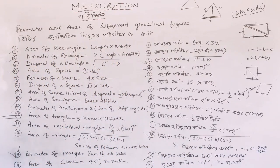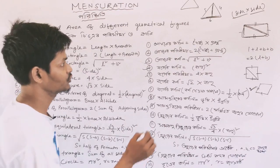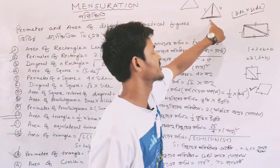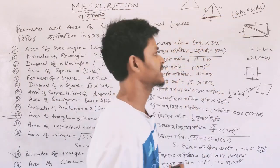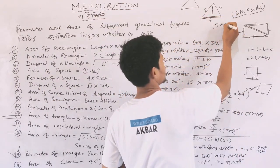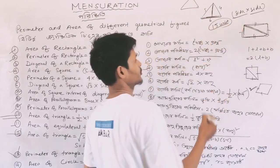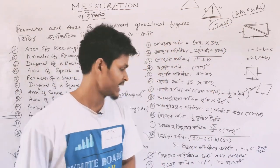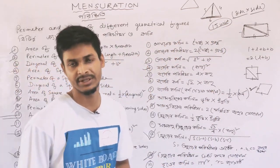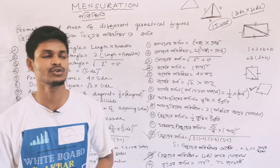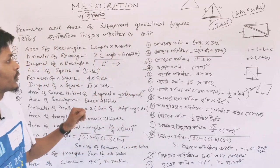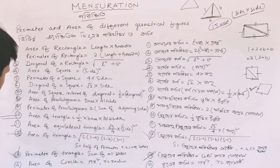Next, perimeter of triangle is the sum of all the sides. We have to find the perimeter of triangle by adding all three sides. The area of circle formula is pi r square. So the perimeter of a triangle equals a + b + c.